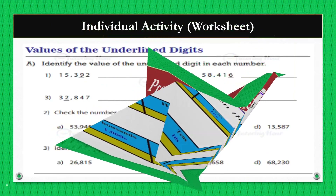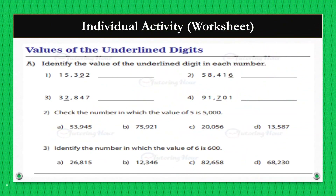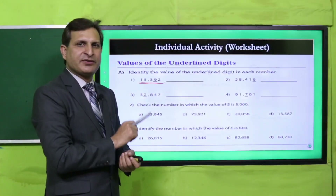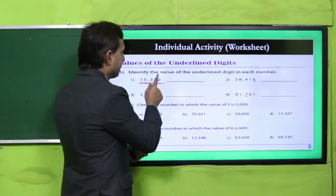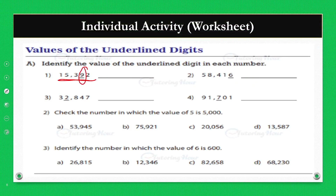अब next एक worksheet है। इसी तरह की worksheet perform करनी है — हर number में identify करना है कि particular underlined digit की place value क्या है। जैसे 90 है — यह underlined digit है — इसकी place value क्या बनती है? Ones, tens, hundreds, thousands, ten thousands — तो इसकी value tens बनेगी। हम लोग 90 write करेंगे या nine tens.